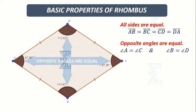Opposite angles are equal. That is, angle A is equal to angle C, and angle B is equal to angle D.